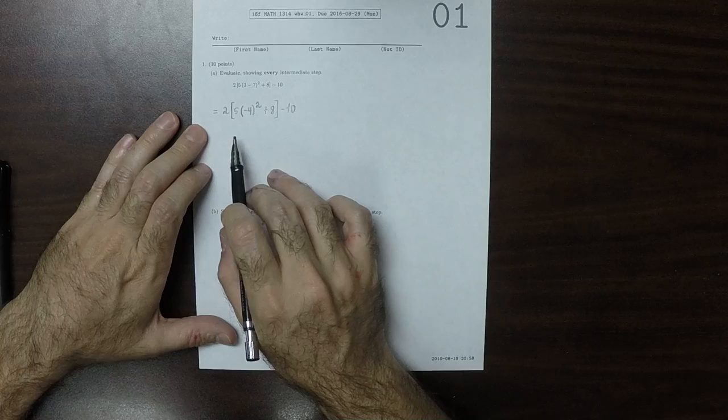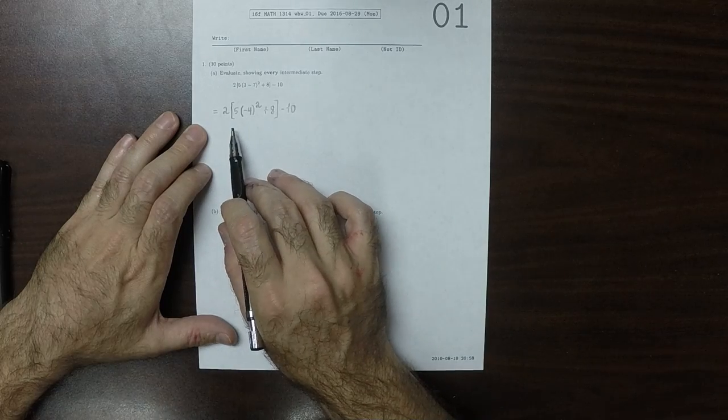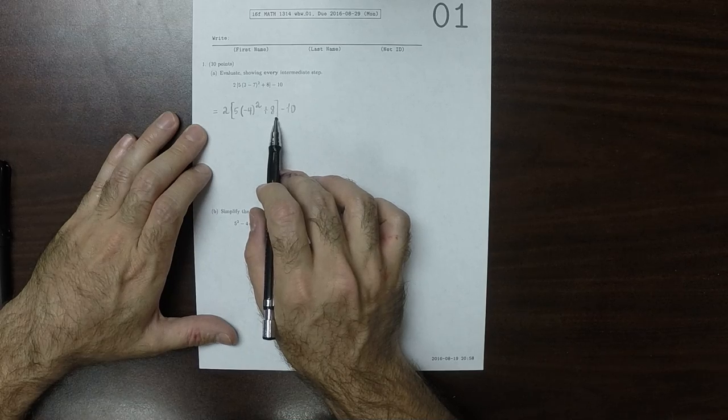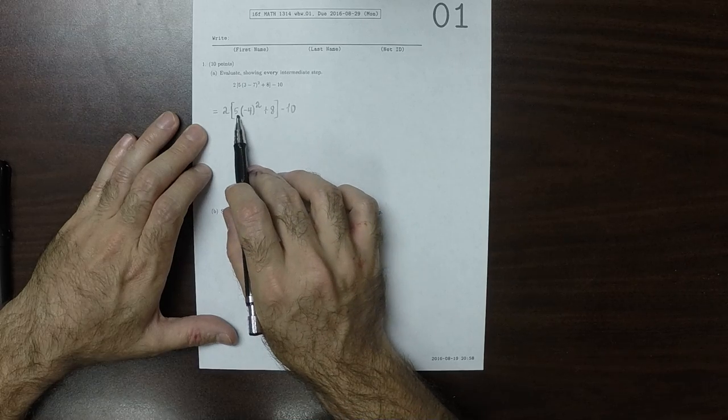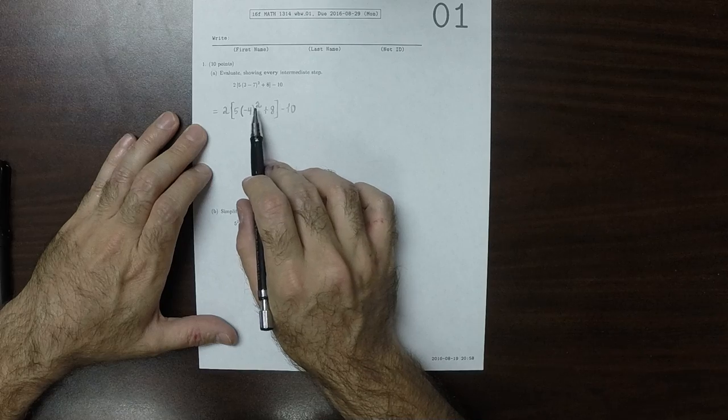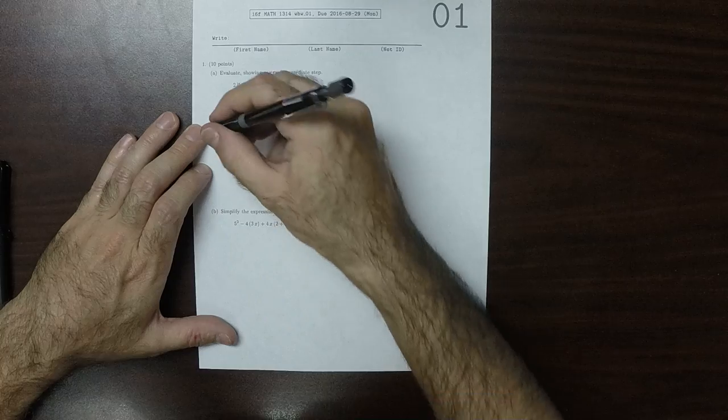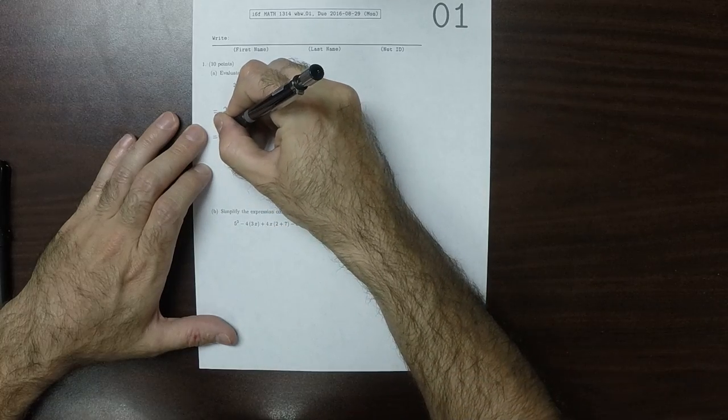Okay, so now in the order of operations, what must occur first is in these parenthesis, and then within these parenthesis we can either multiply, exponentiate, or add. And of those, the exponentiate has the highest precedence so it occurs first.